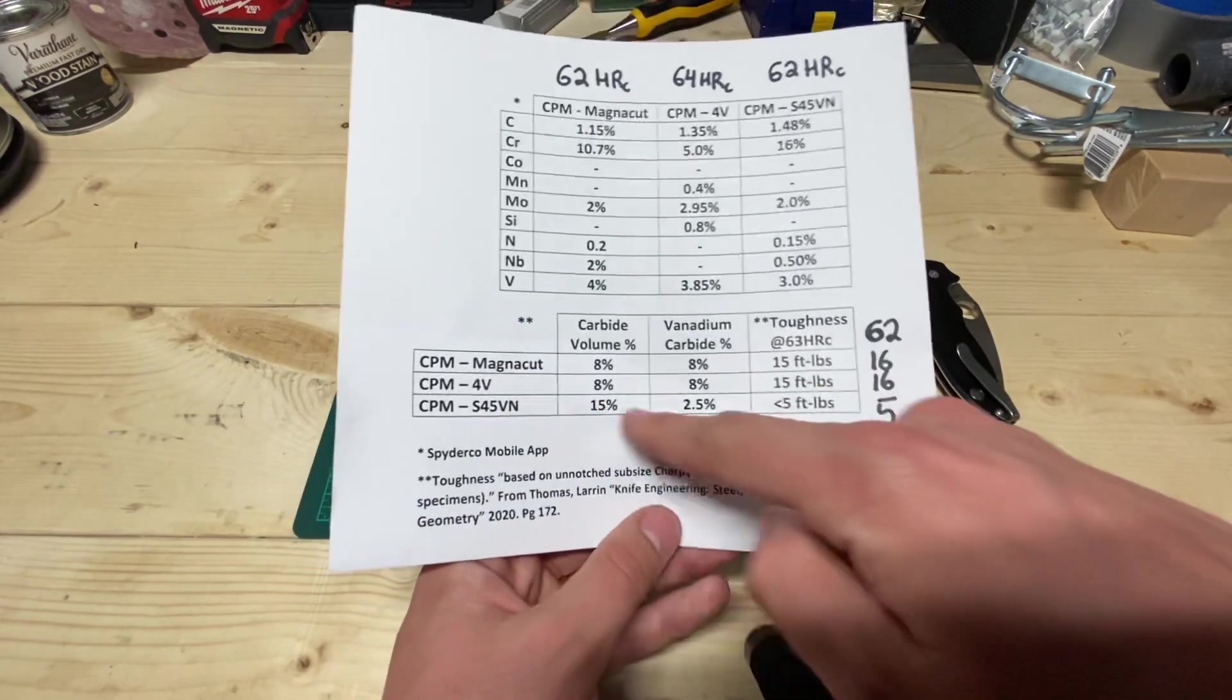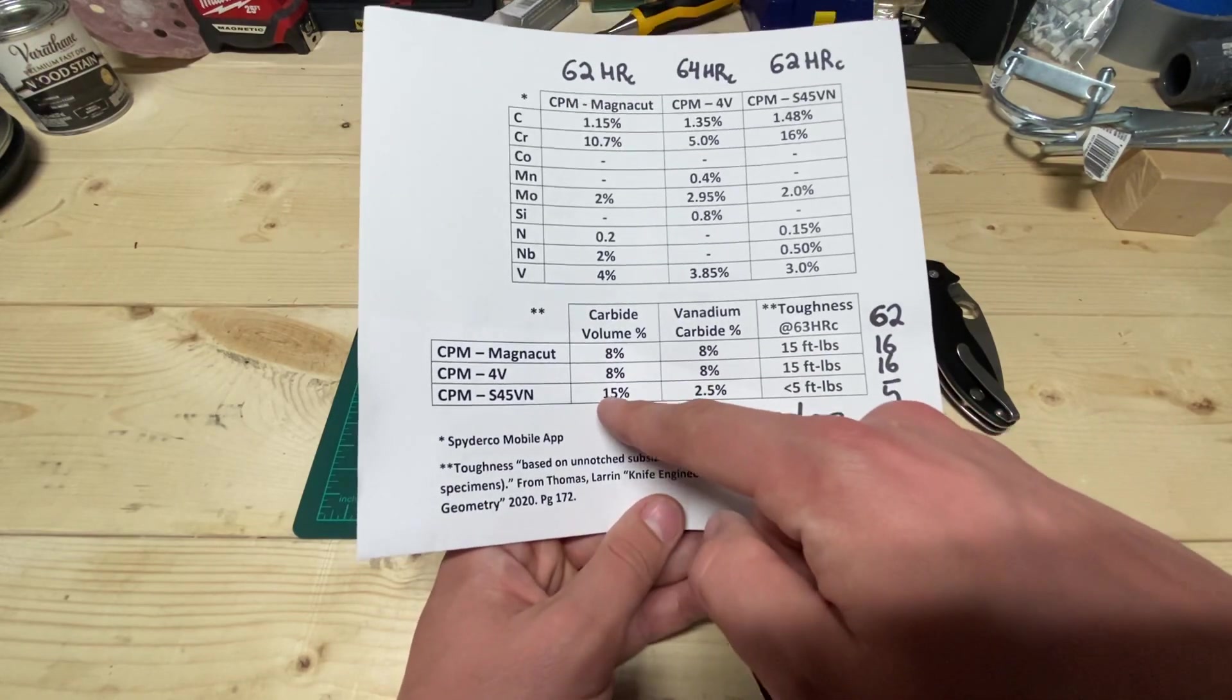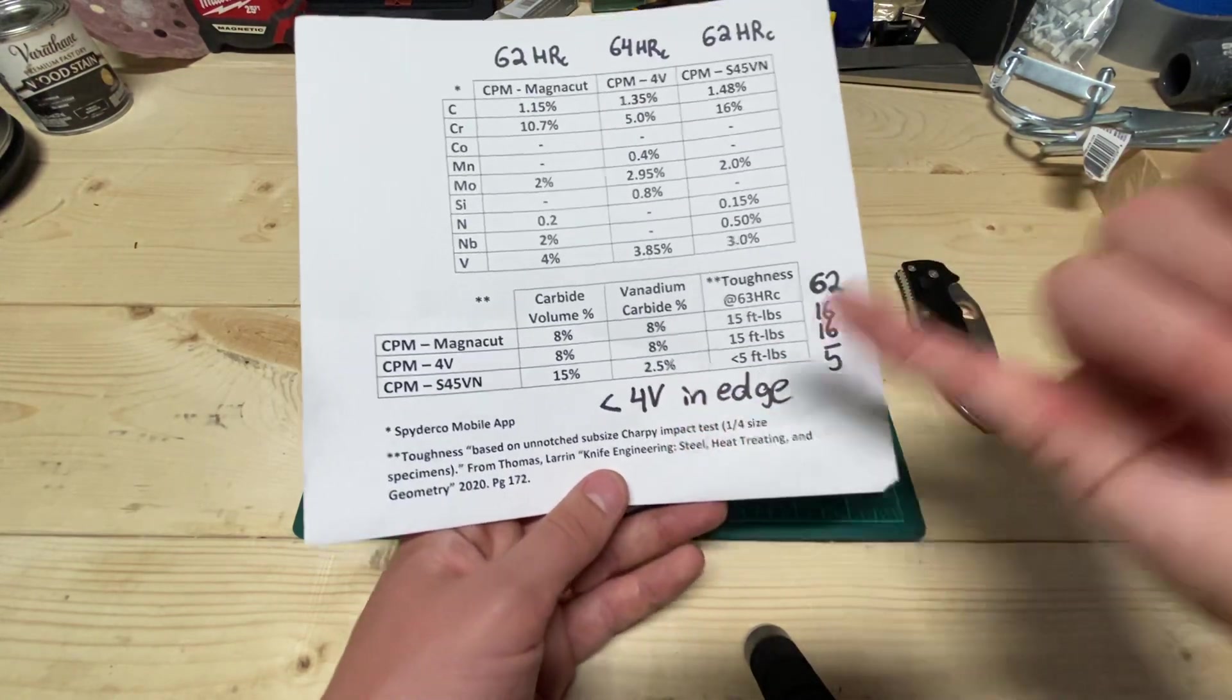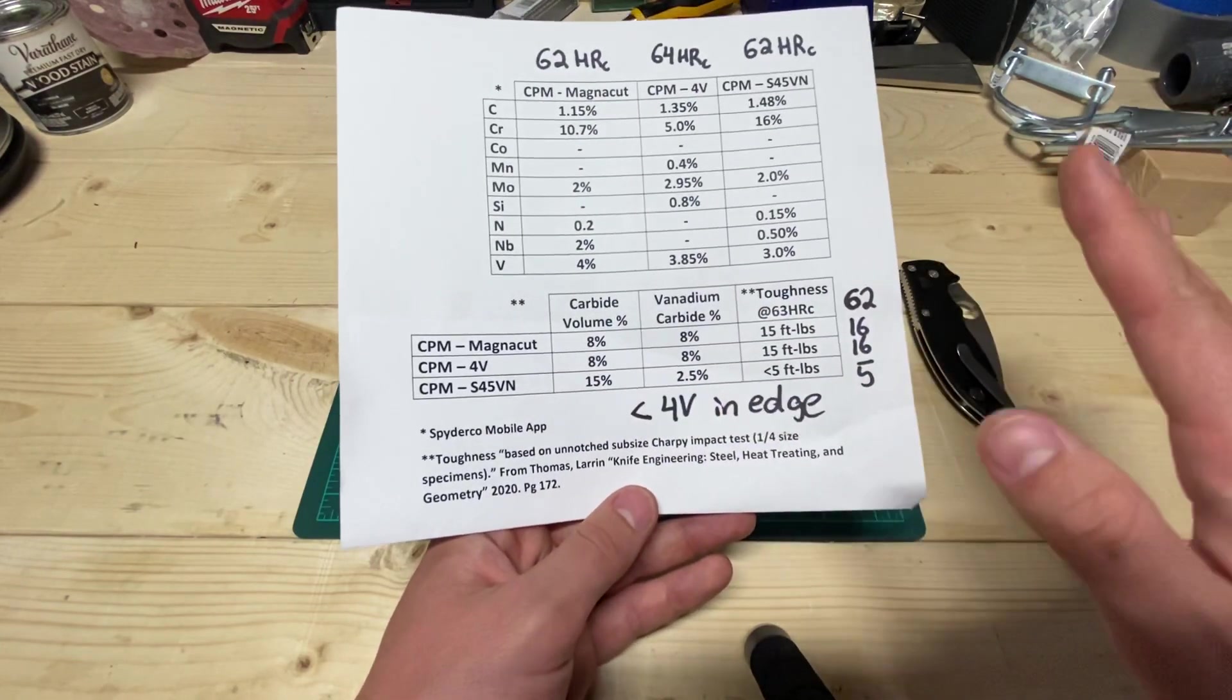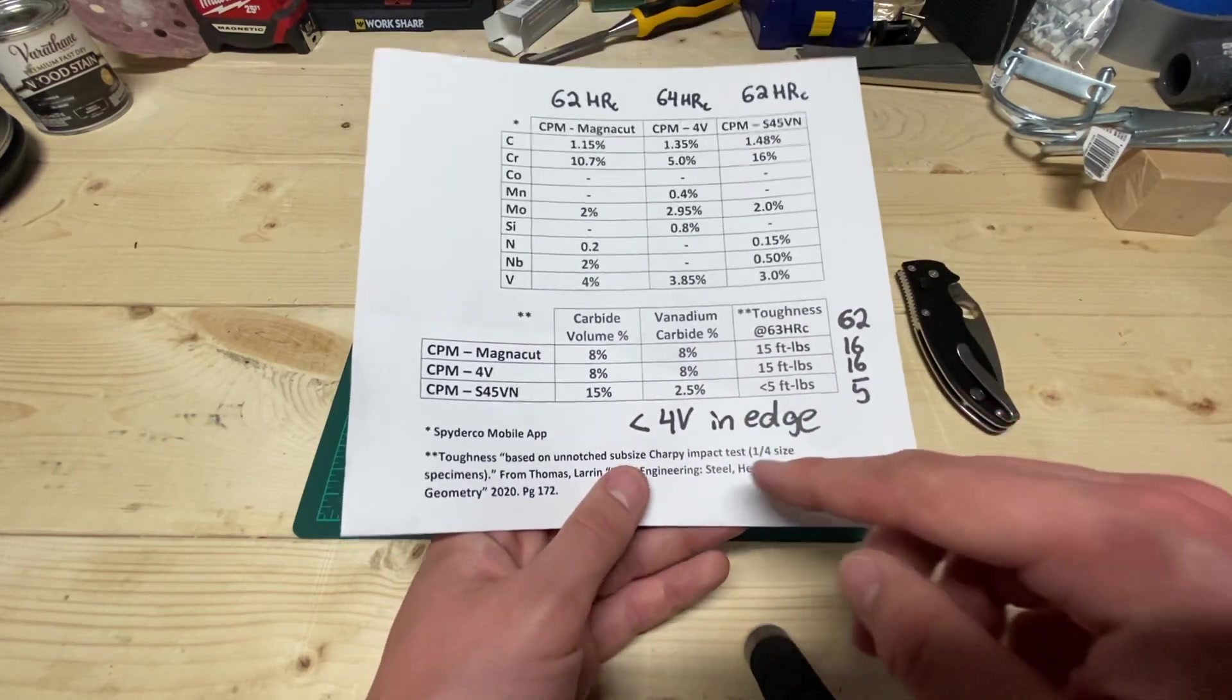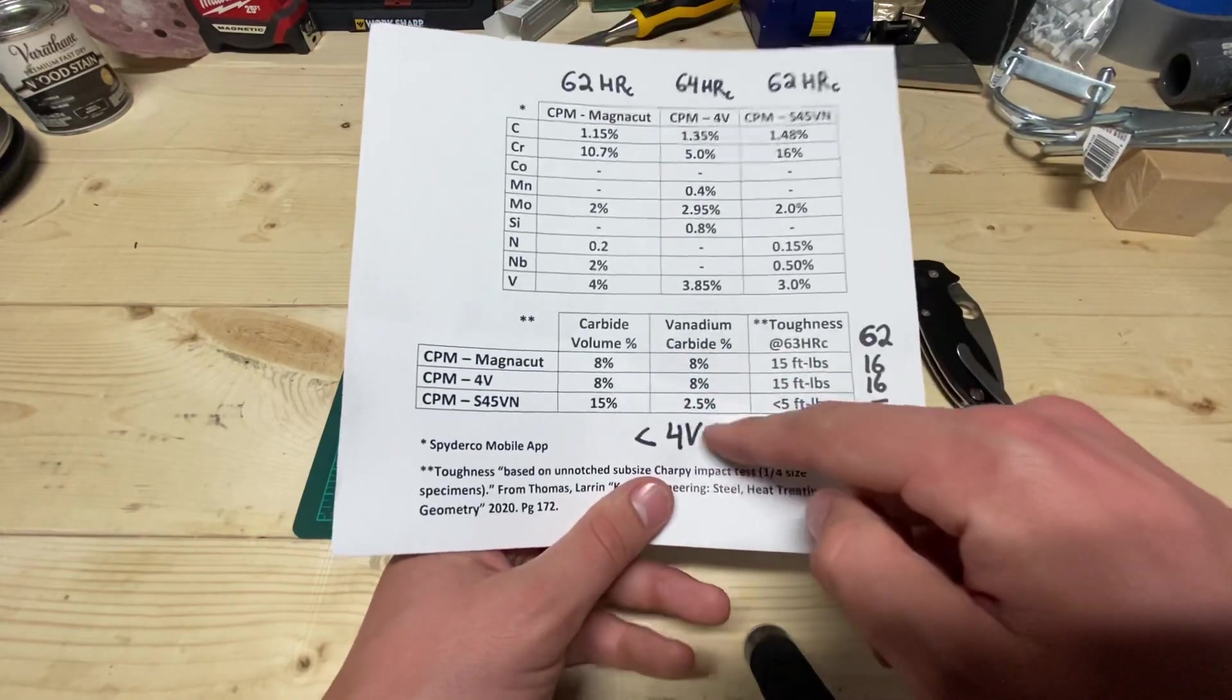So if you compare that to S45VN, only 2.5% of this 15% are vanadium carbides. So like 12.5% of this are some form of chromium carbide, meaning it's just not very efficient. And S45VN does a fairly decent job of how it's managing these carbides too, don't get me wrong. I'm not trying to bash S45VN. But I'm just trying to draw a comparison because S45VN is kind of the up and comer right now.